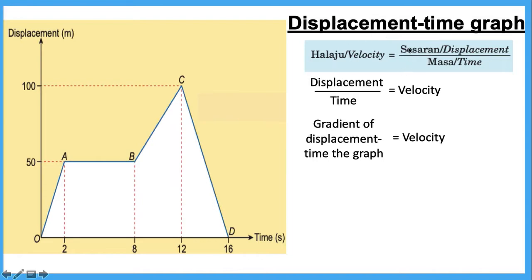Now let's learn how to relate the formula of velocity with the displacement against times graph. You have learned how to calculate velocity using this formula in a previous class. To calculate velocity, you divide the displacement by the time. When you take any value of displacement and time from this graph and divide, you also get the value of velocity. Therefore, we can conclude that the gradient of the displacement against times graph is equal to the value of velocity.